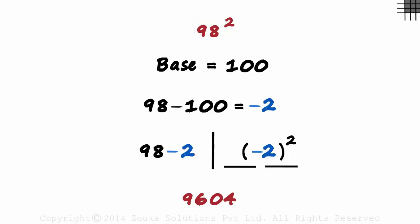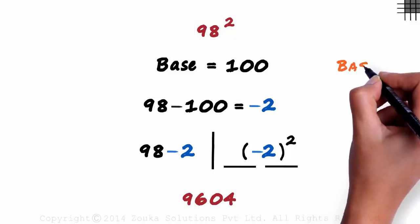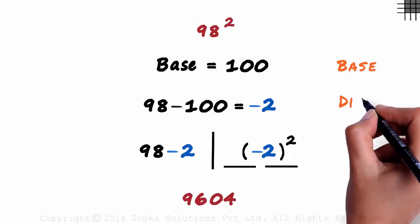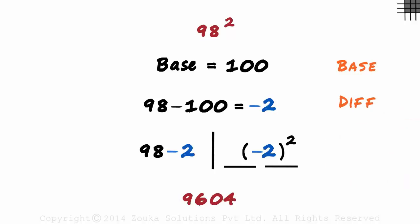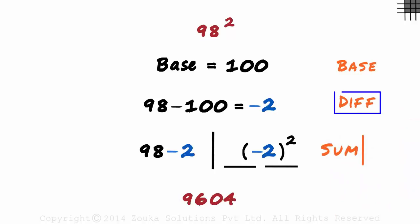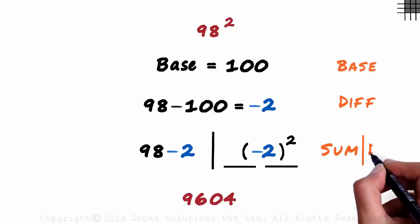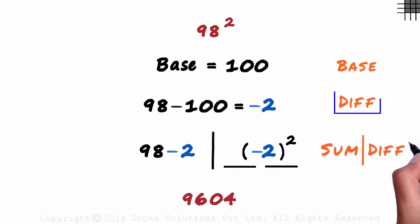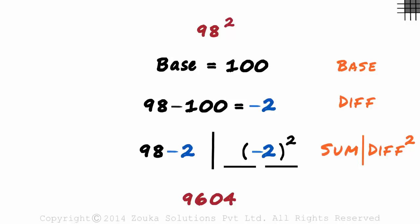Remember the steps: base, difference between the number and the base, partition — sum of the number and the difference on the left, and the square of the difference on the right. In the next part of the session, we will solve for squares of larger numbers which are close to a power of 10.